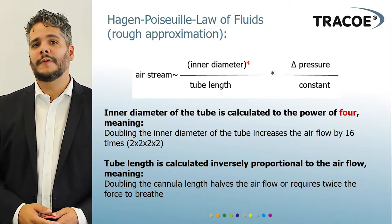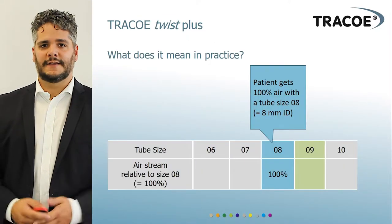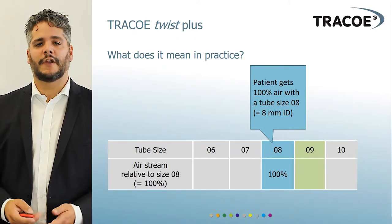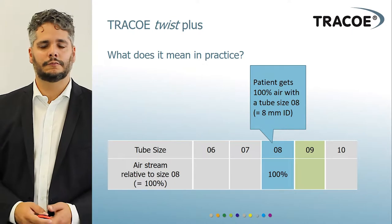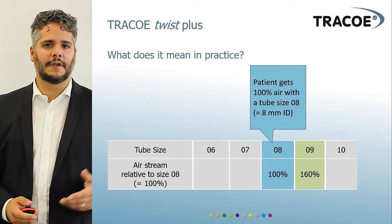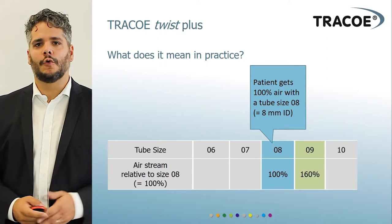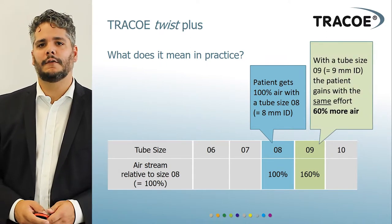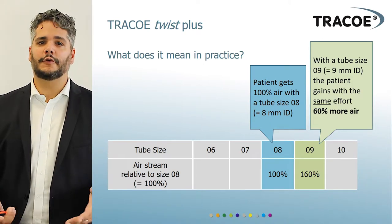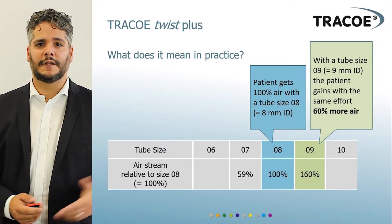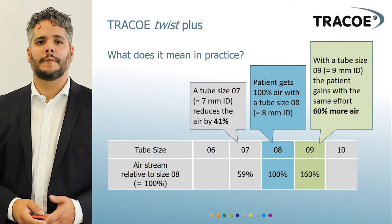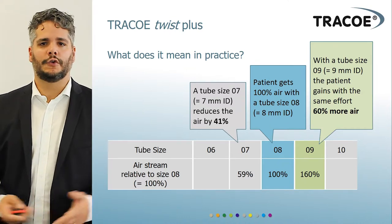In practice, if an inner diameter of 8 mm represents 100% of air flow, increasing the inner diameter by 1 mm to 9 mm will increase air flow by 60% using the same effort. Conversely, decreasing by 1 mm to a 7 mm inner diameter will reduce air flow by 41%, again using the same effort.